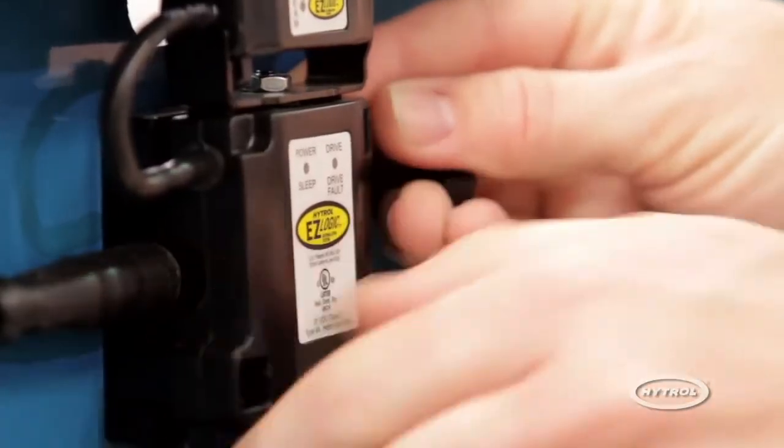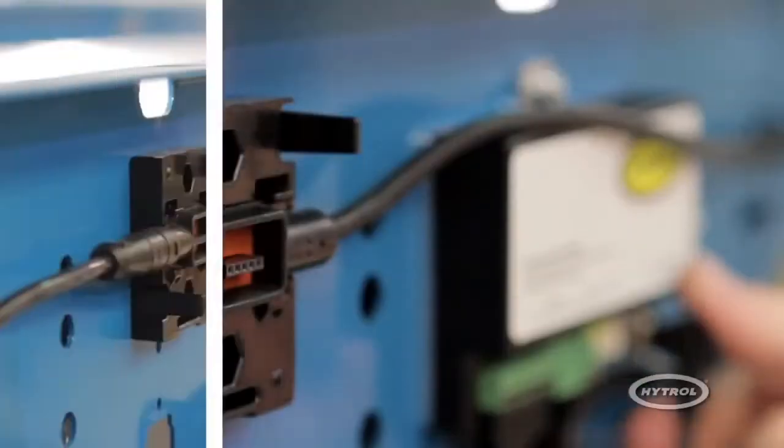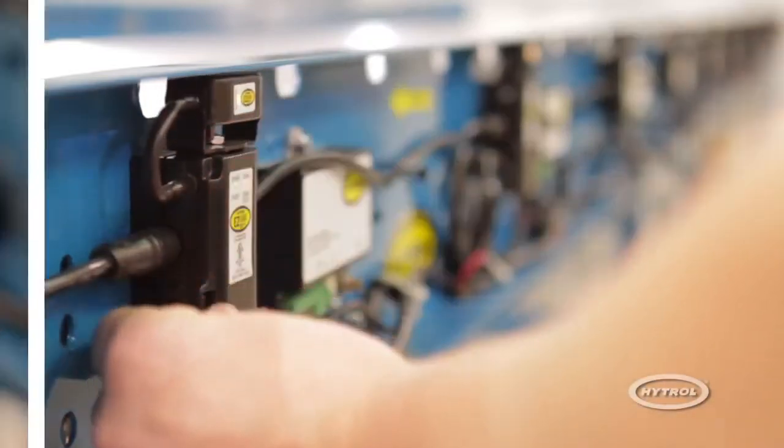Replacing a zone controller is as easy as removing the existing unit, snapping a new one in place, and configuring it.